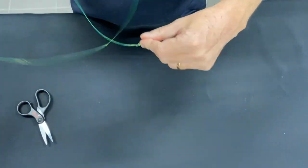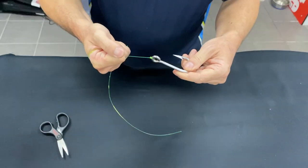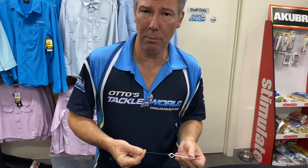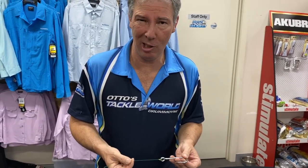Now the good thing about this knot is the more you pull, the tighter it gets. Fantastic knot. Alright, so use that knot for anything from 6 to 200 pound line. Catch plenty of fish and thanks for watching.